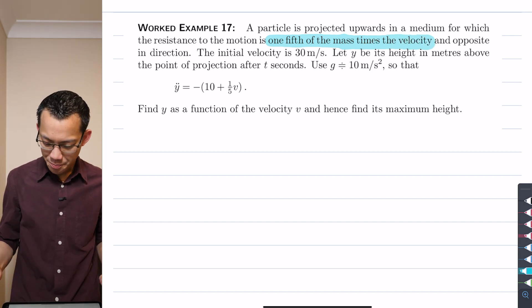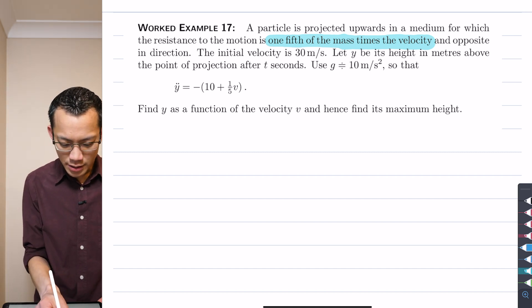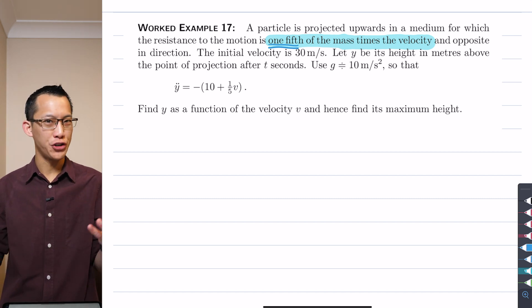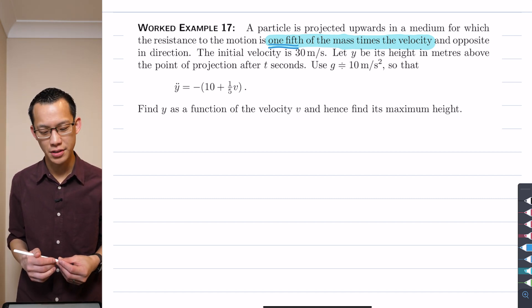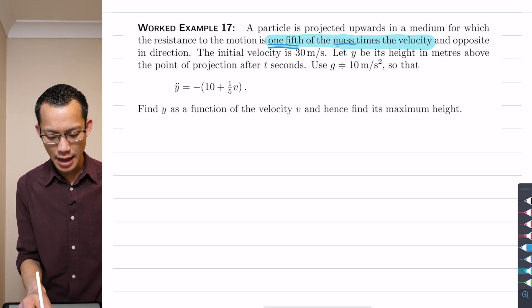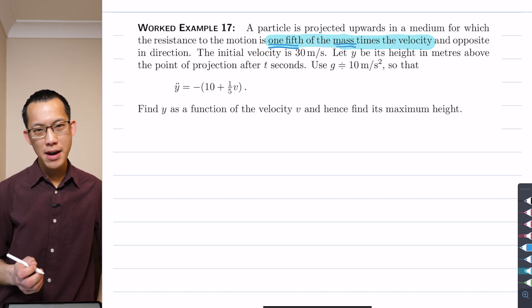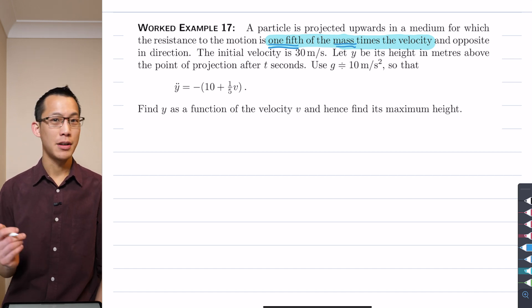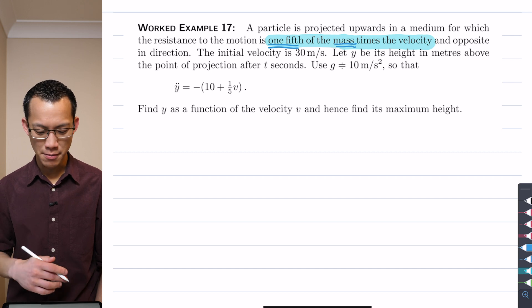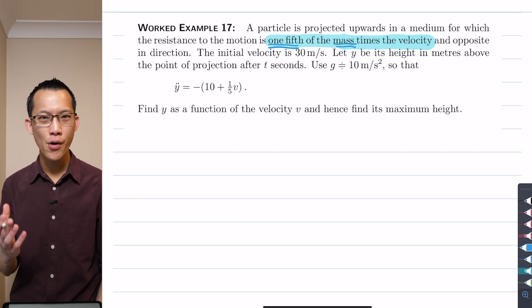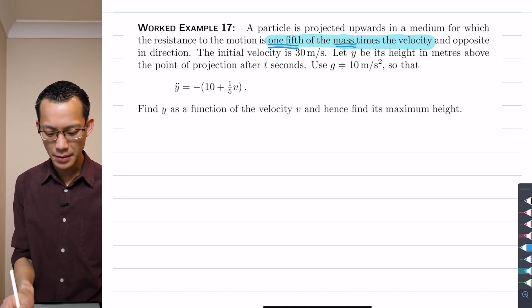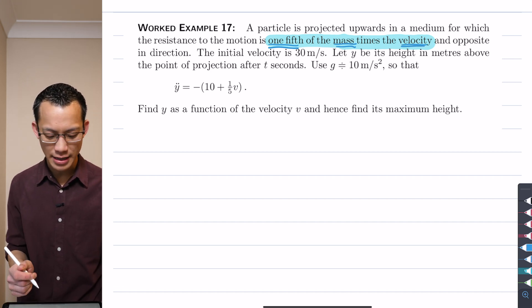So you can see right here this one-fifth, this is the k that we're talking about, right? So this is the constant of proportionality. One-fifth of the mass, so there's one-fifth times m and then it's multiplied by the velocity. I did say before sometimes you're multiplied by the velocity squared. In theory there's nothing wrong with being multiplied by velocity cubed or to the power of four, but in the context of the course you'll really only see velocity or velocity squared.